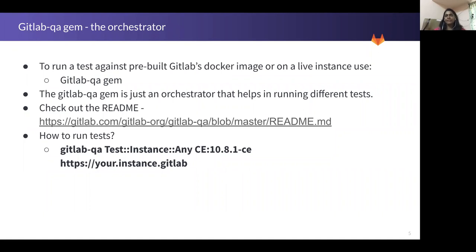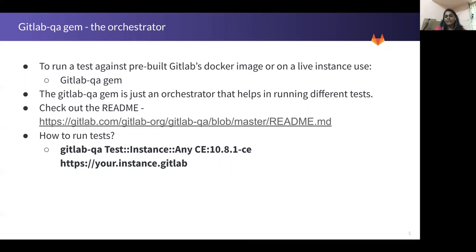The GitLab QA gem — this is something I want to talk a little bit about. This is basically a gem that we have written, and it acts as an orchestrator. If you want to run your tests locally, it's good enough if you just have your GDK setup. But if you want to run tests against any other instance — say a Docker image that is already built, or a live GitLab instance — then you can use this GitLab QA gem. The commands you can find here are very similar to what we saw in the previous slide. You can specify the URL of the instance and also specify specific spec files as command line arguments.